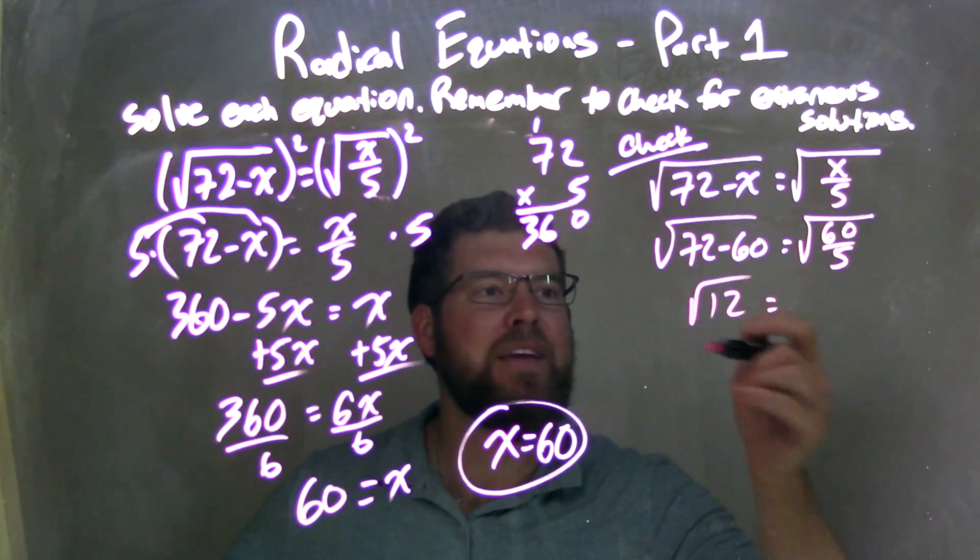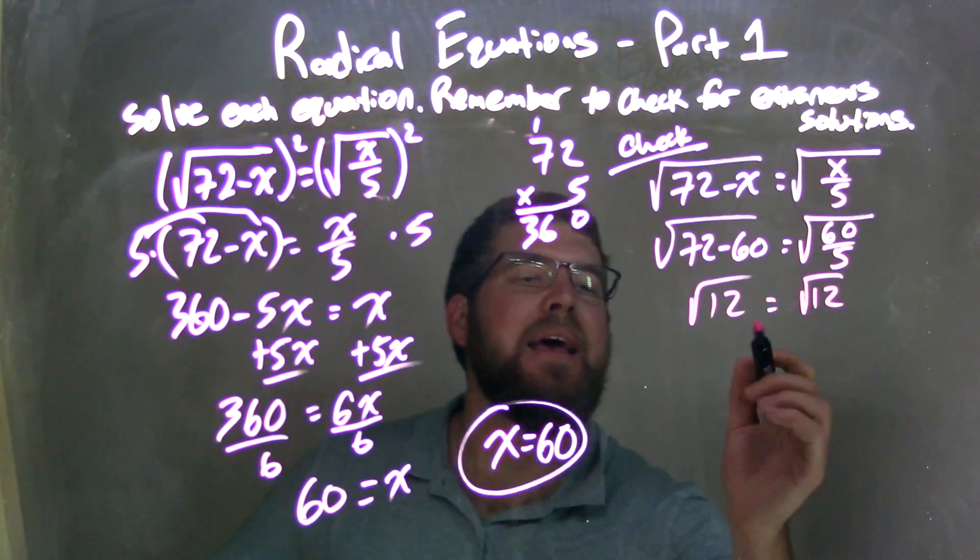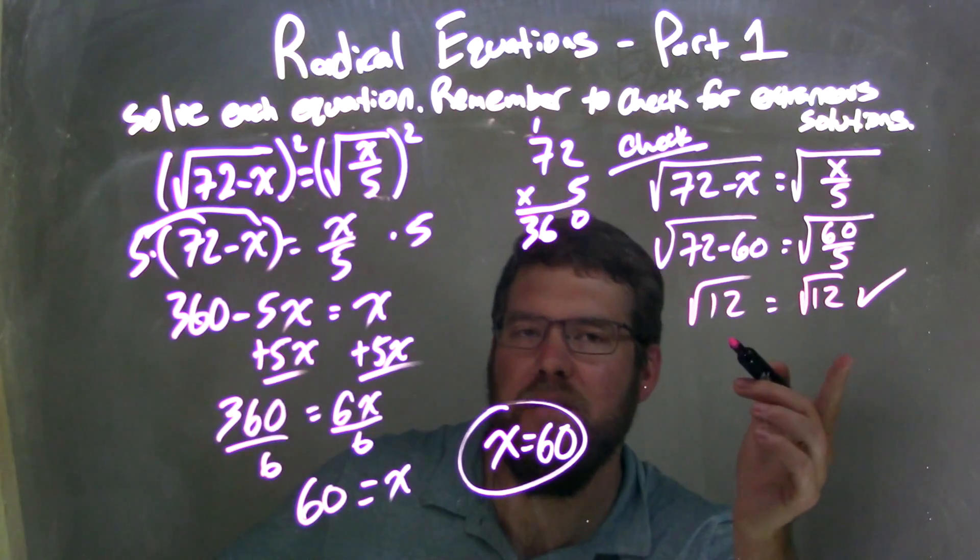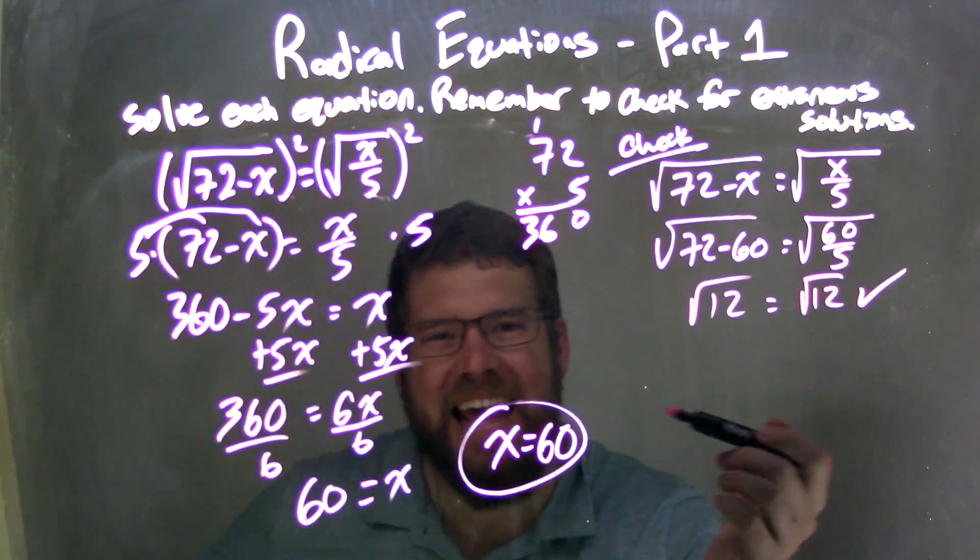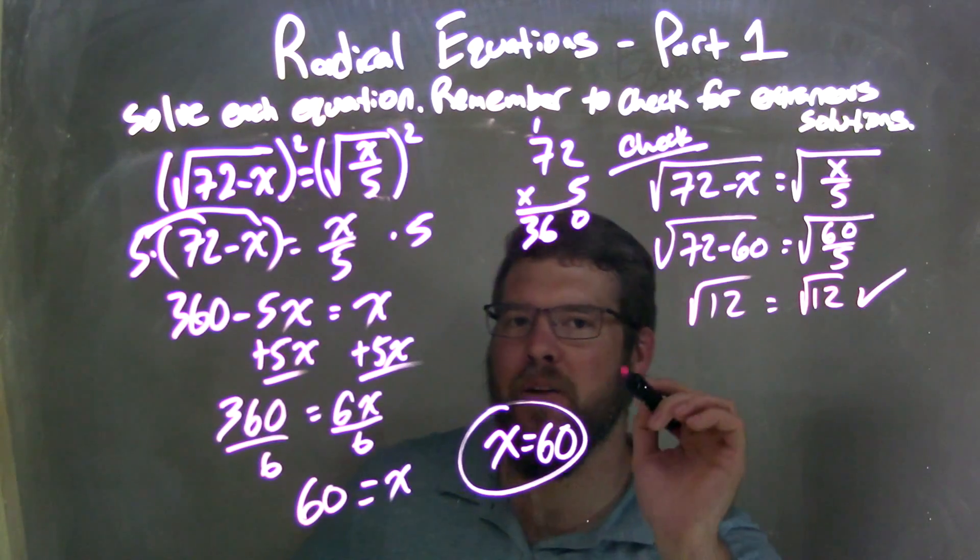And 60 divided by 5 is also 12. Leaving me with 12 equaling 12. Fantastic. That's the correct answer there. And so we have no extraneous solutions and x equals 60 is my final answer.